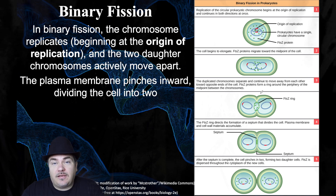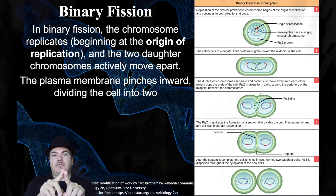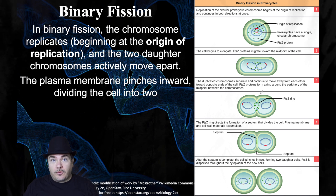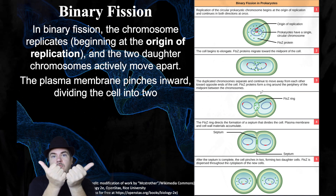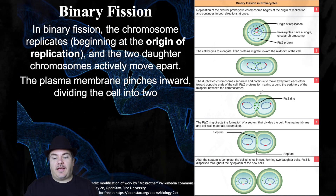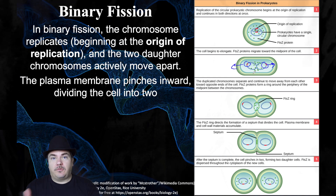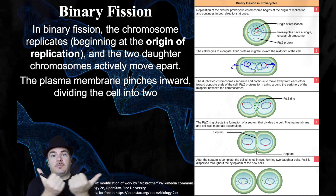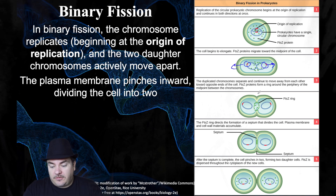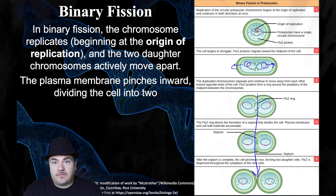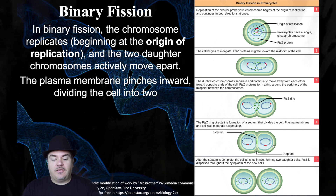At the same time you're copying the chromosome, the two origins of replication start moving to opposite sides of the cell — one going one way, the other going the other way. You keep copying the chromosome while the origins of replication, and therefore the chromosomes, move to opposite sides of the cell. Then the cell starts to pinch in the middle to split into two separate cells. That's the level of detail we cover for binary fission in Bio 1.